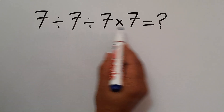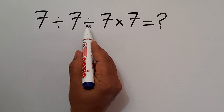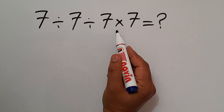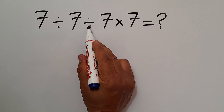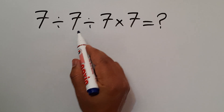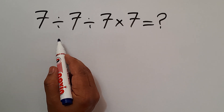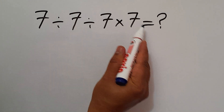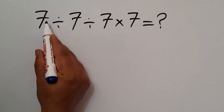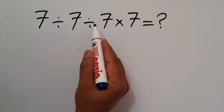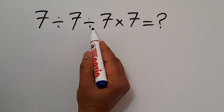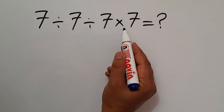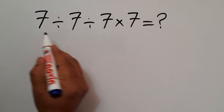In this expression we have two divisions and one multiplication. As we know, multiplication and division have equal priority, and we have to work from left to right. So first this division, then this division, and finally this multiplication.